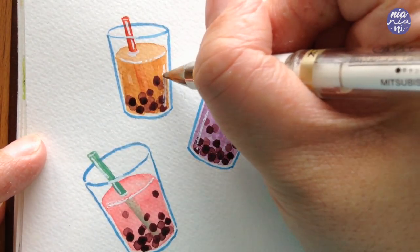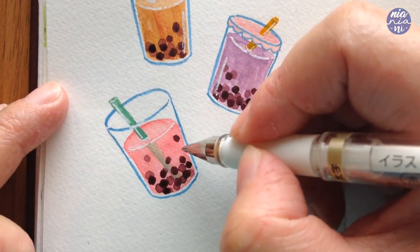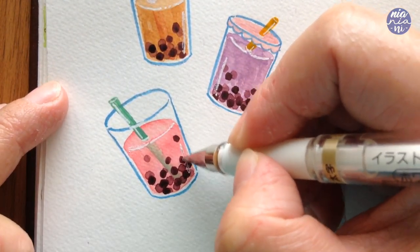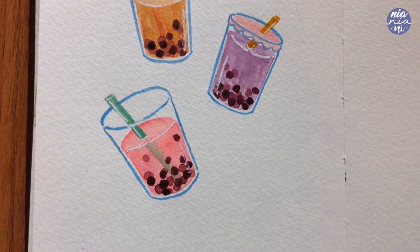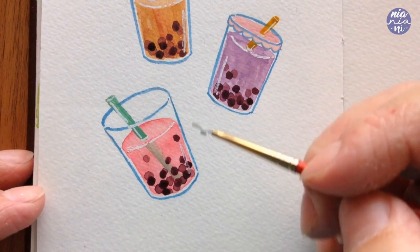And for the rest, you can actually just use the white pen. As you can see, I put a line where the straw is just so it looks a little bit more like it pops out.